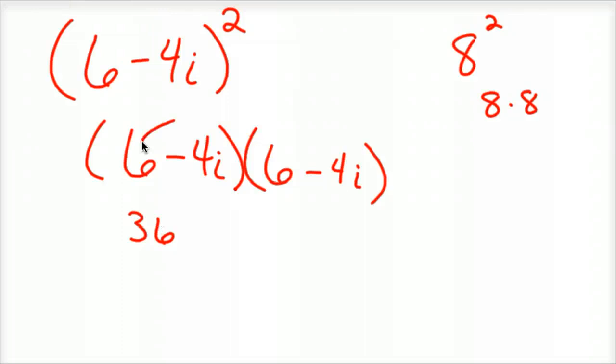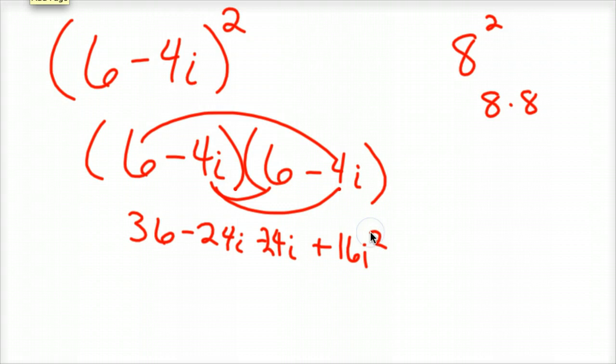So 36 minus 24i. And now you can do the negative 4i through, which would be minus 24i, plus 16i squared. Because negative, negative is a positive. And if you combine that, that would be 36, and this is a minus 16, because i squared is negative 1. So 36 minus 16 is 20 minus 48i.